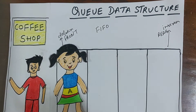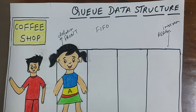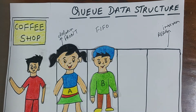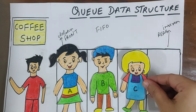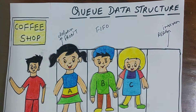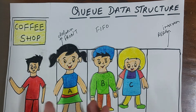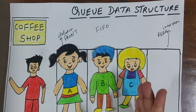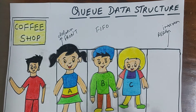Now A comes first and stands in the front of the queue. Then B comes and stands in front of the queue after A. Then C comes and stands in the queue after B. So A is standing in the front because she came first, then B after A and C after B — like they are standing in a queue.